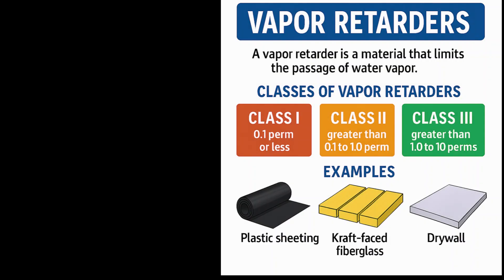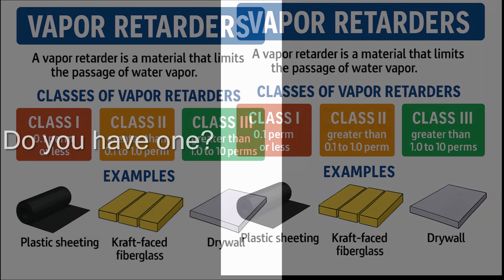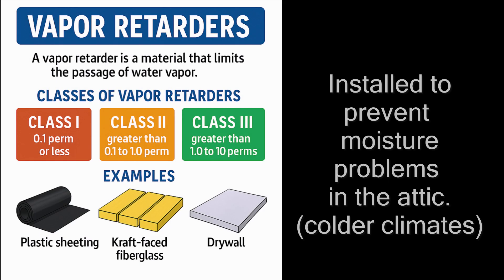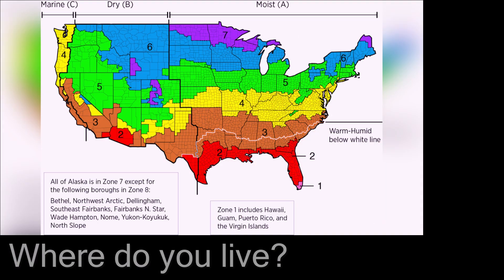One thing you need to know to determine how much net free ventilation area you need for your house is whether or not you have a vapor retarder. The first tip to see if you might have one without even having to go into the attic is to determine what climate zone you're in.